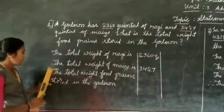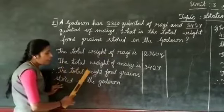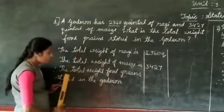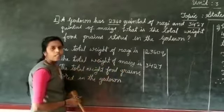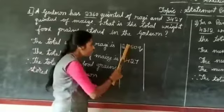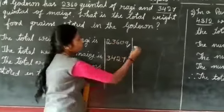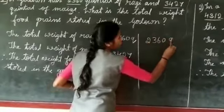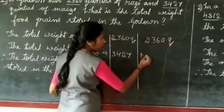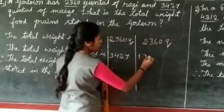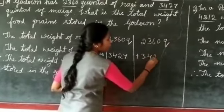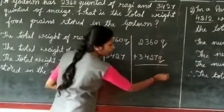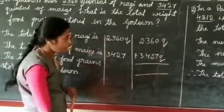So, let us find the total weight of food grains stored in the godown. Now, we have to add the numbers. 2,360 quintal plus 3,427 quintal. So, add the numbers.